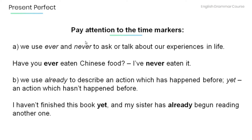Now make sure to pay attention to the time markers. We use ever and never to ask or talk about our experiences in life. For example: Have you ever eaten Chinese food? I've never eaten it. We use already to describe an action which has happened before, and yet to describe an action which hasn't happened. For example: I haven't finished this book yet, and my sister has already begun reading another one.